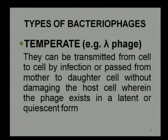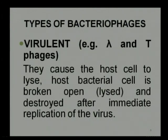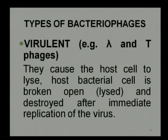Temperate phages are phages that can be transmitted from cell to cell by infection, or passed from mother cell to daughter cell without damaging the host cell, wherein the phage either exists in a latent or a crescent form. On the contrary, the other type of bacteriophage is known as a virulent phage, and examples include lambda phage as well as T phage. Virulent phages cause the host cell to lyse — meaning the host bacterial cell is broken open or lysed and destroyed after immediate replication of viruses.